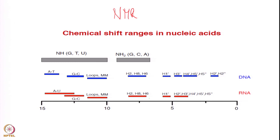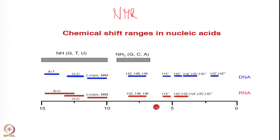We already mentioned the various protons in DNA and RNA in various places, and I have listed them here. The proton chemical shifts, as we have already seen, can go from 0 to 15 ppm with respect to a particular reference. Typically when we record in water, we use TSP as a reference, giving this 0 to 15 ppm range.